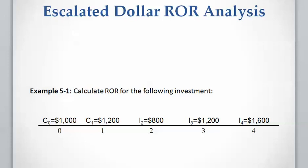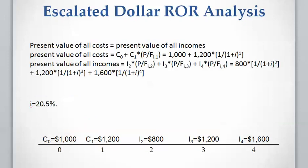Let's work on an example to calculate the rate of return for escalated dollar cash flow and also constant dollar cash flow. This cash flow is given for an investment. To calculate the rate of return, we write the equation: present value of costs equals present value of income plus present value of salvage. We don't have salvage value here, so present value of cost equals present value of income. We have two costs: a thousand dollars at present time and twelve hundred dollars at year one, and three incomes of eight hundred, twelve hundred, and sixteen hundred dollars in years two, three, and four. We write the equation, solve for i, and calculate the rate of return as 20.5 percent.